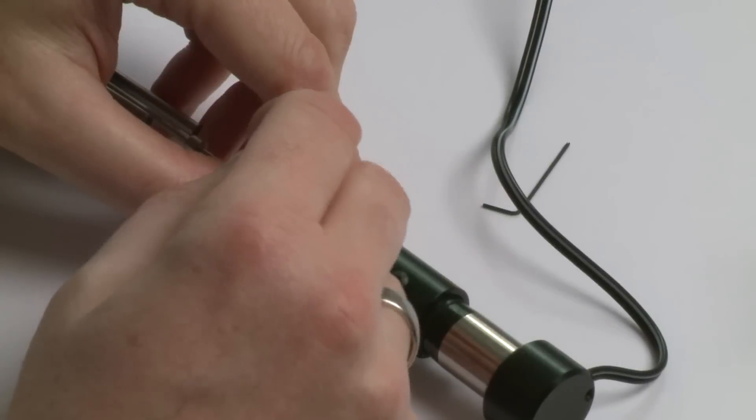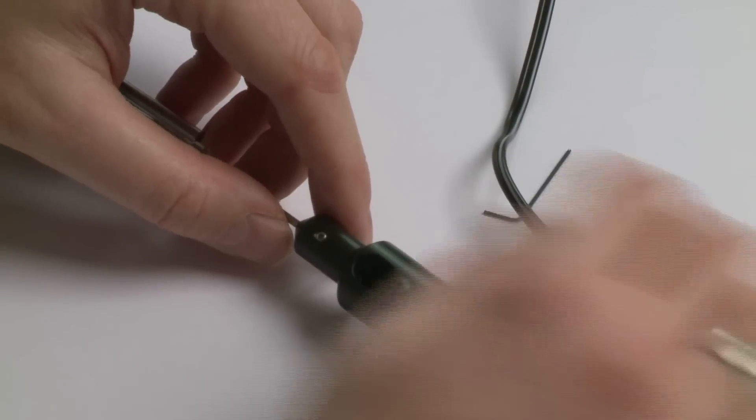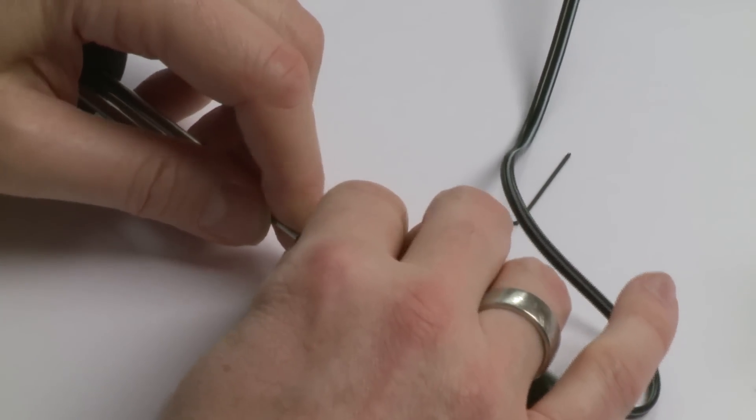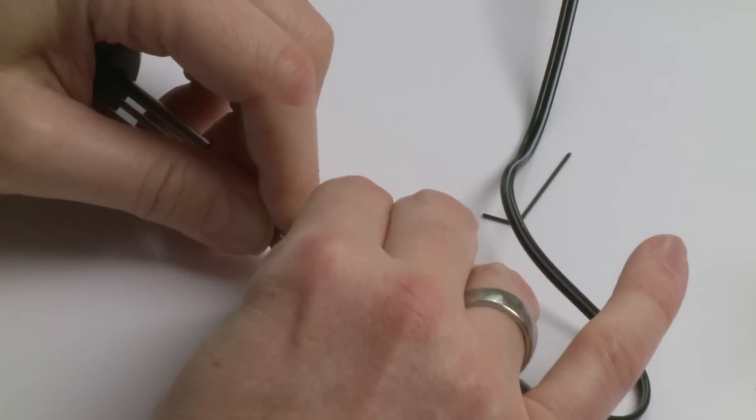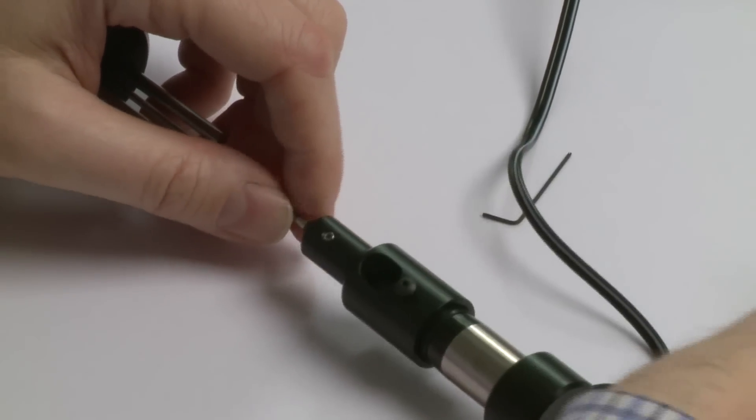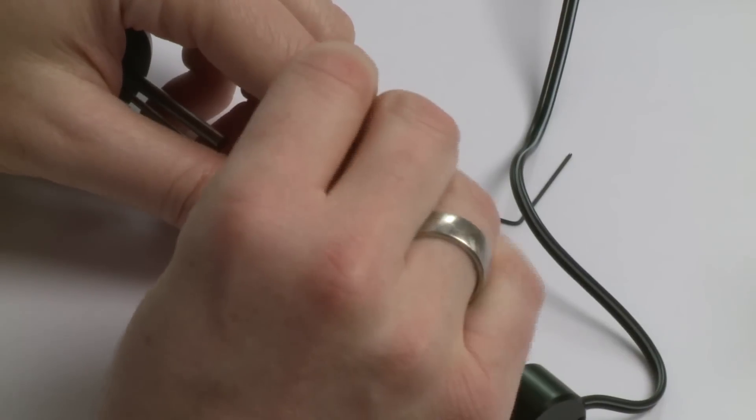And you have two screws, one on each side, and then you have to move the holder down a bit and refasten.